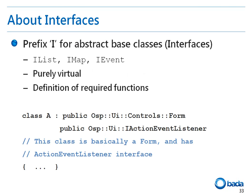An interface refers to a class where all the functions are defined as virtual functions. An interface can be regarded as a set of functions necessary for classes that perform a specific function. For example, the iList interface is a class that consists of functions that list classes must commonly have, regardless of the implementation method or the data type.